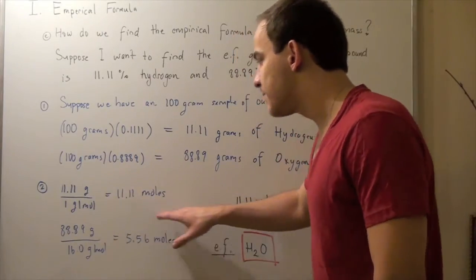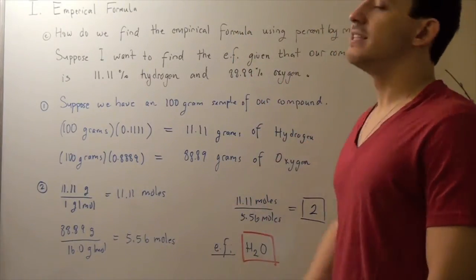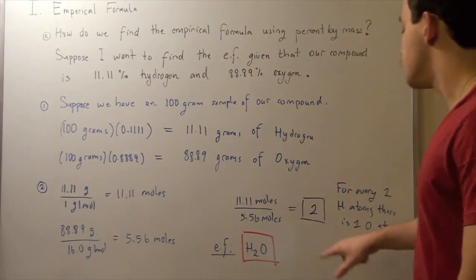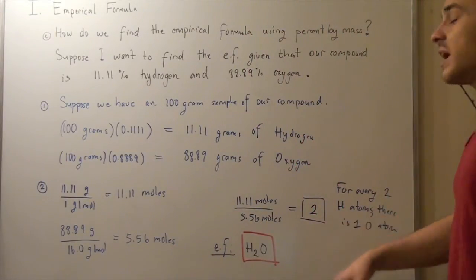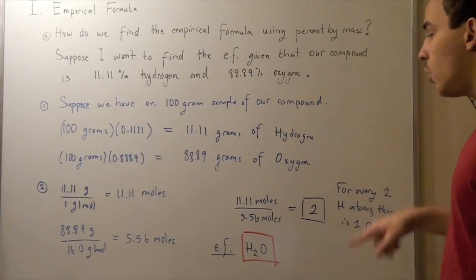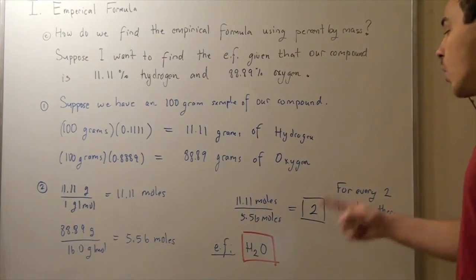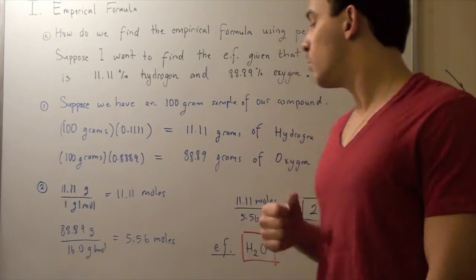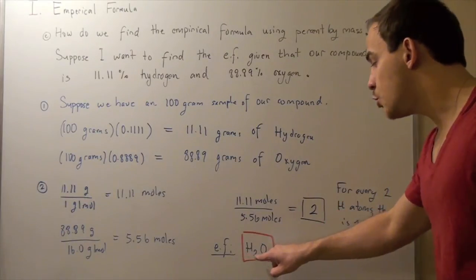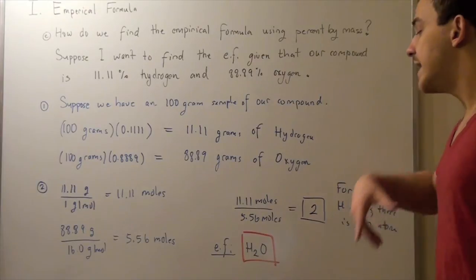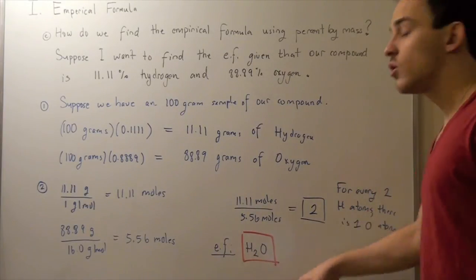So now, I simply take this guy, the moles of my H, divide that by the moles of my oxygen and I get 2 or approximately 2. And this means that for every 2 moles of H, I have 1 mole of oxygen. And therefore, I could write my empirical formula in the following way. For every 2 moles of H, I have 1 mole of oxygen and my empirical formula is water.